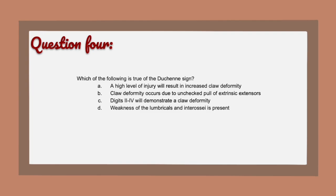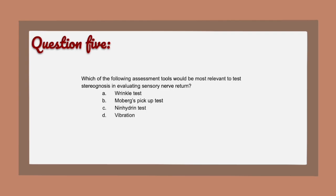Continuing Question 4 options: B) Claw deformity occurs due to the unchecked pull of the extrinsic extensors. C) Digits two through four will demonstrate a claw deformity. D) Weakness of the lumbricals and interossei is present.